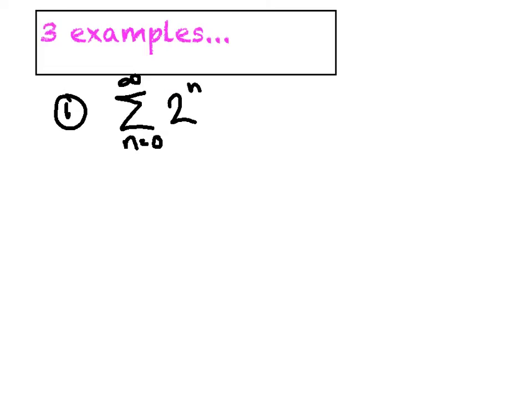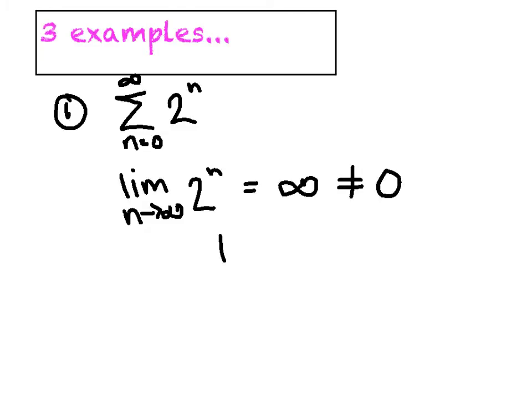Let's look at three examples to illustrate the nth term test, and we're going to apply this test first thing every time we see a series. For the first example, we ask: what is the limit as n approaches infinity of 2 to the n? As n gets bigger and bigger, the terms get bigger and bigger, and in fact the limit equals infinity. Because that's not equal to zero, we say this series instantly diverges. No more work is needed.